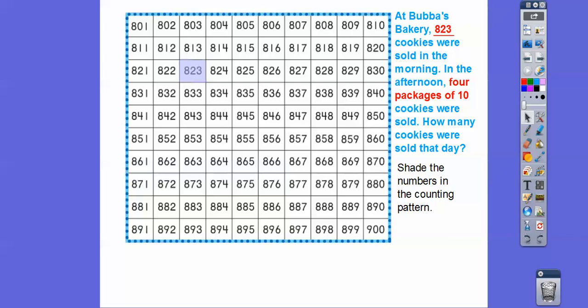And then it says, after that, four packages of 10 cookies were sold. So what we're going to do is add a one to each tens column, so that would be where the two is. We're going to add a one and shade that one right there. So there's 833, and it said there's four of them. So there's two, there's three, there's four. So how many cookies were sold that day? There were 863 cookies sold on that day right there.